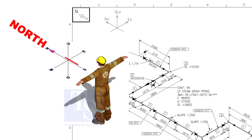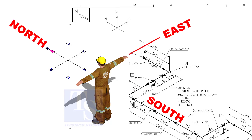As you look at the north direction of a drawing, the back of your head is to the south, your right hand is to the east, and your left hand is to the west direction.